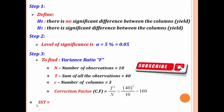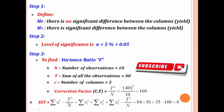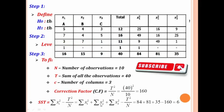Next we find SST, the sum of squares total. SST = sum of Xi² minus correction factor = (sum of X1² + sum of X2² + sum of X3²) minus correction factor = 84 + 81 + 35 minus 160 = 6.